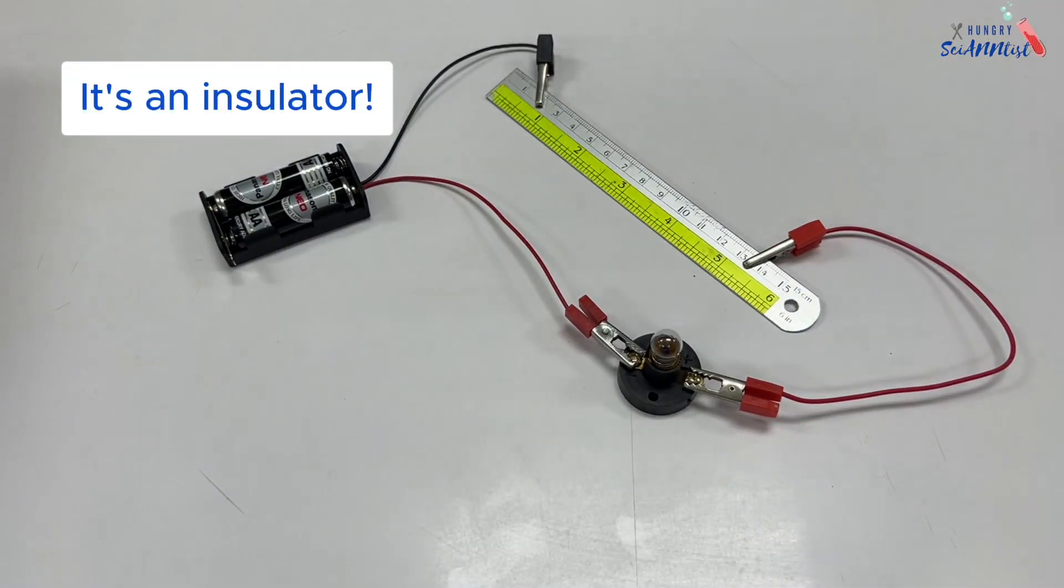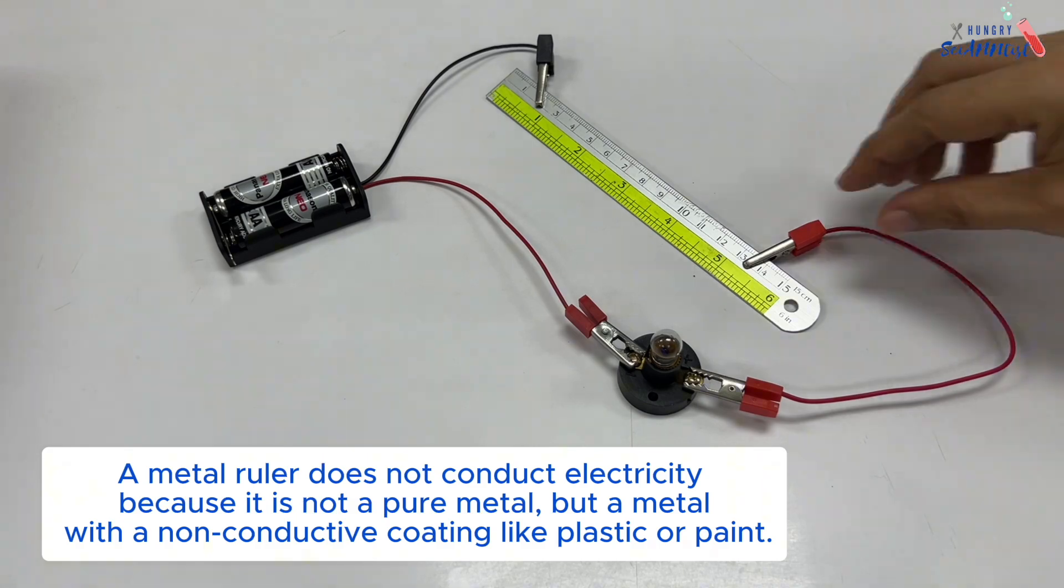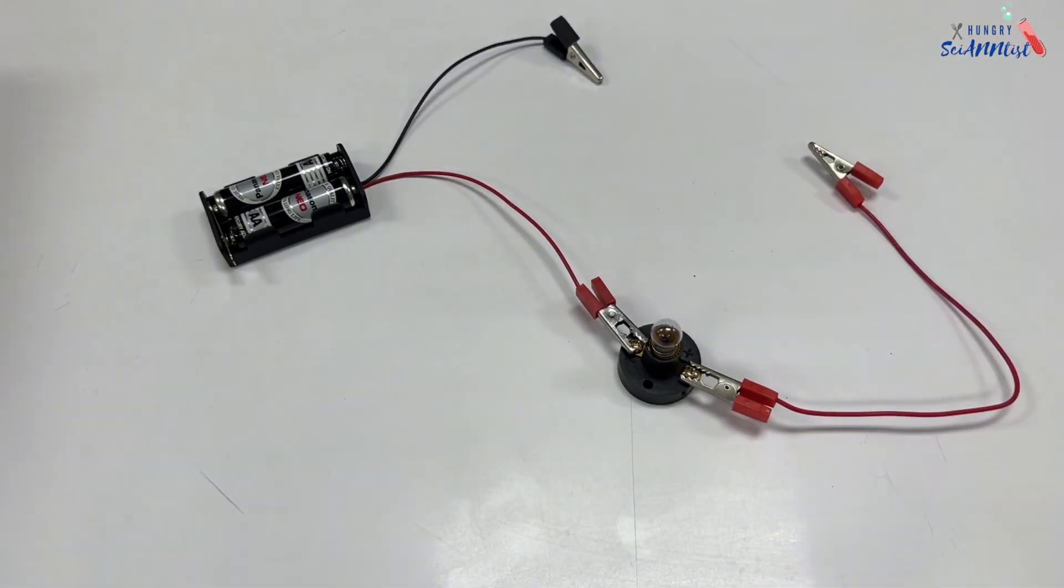A metal ruler does not conduct electricity because it is not a pure metal but a metal with a non-conductive coating like plastic or paint.